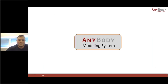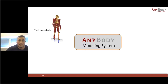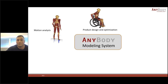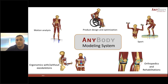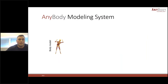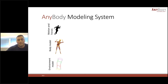AnyBody is used in a wide variety of areas and applications. A few examples include motion analysis, product design and optimization, sports, orthopedics and rehabilitation, and also ergonomics both with and without exoskeletons. The typical workflow involves providing recorded motion data as input, using body models, providing some kind of environment such as an exoskeleton or other assistive devices, and then combining these things within AnyBody.